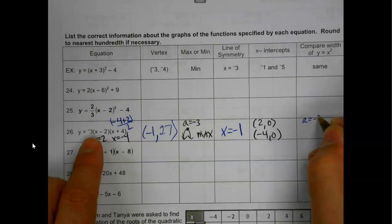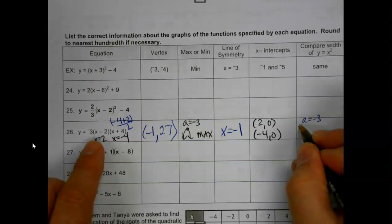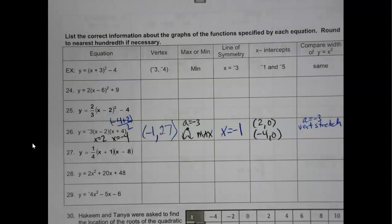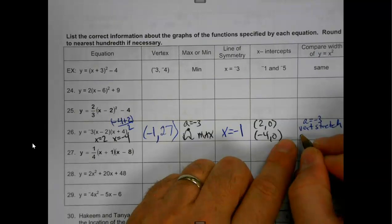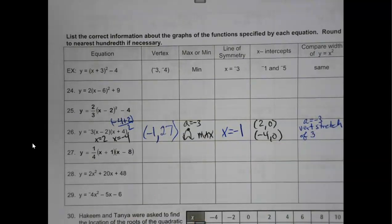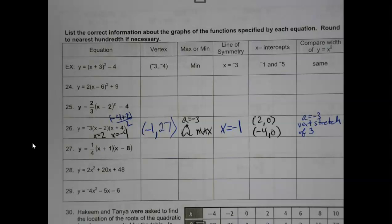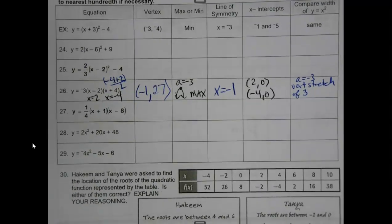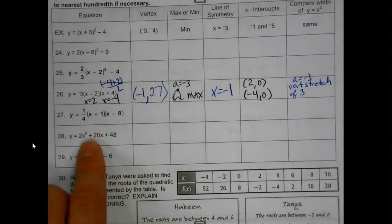Compare the width of y equals x squared. If my a is negative 3. We've got a vertical stretch of 3. And again, I'll mention, since you're going to see it in the answers at the bottom, if it's larger than 1, it's going to be a stretch. If it's less than 1, you're compressing it. You're smashing it down. It's going to make it wider. So, that's how I would play with one of those.